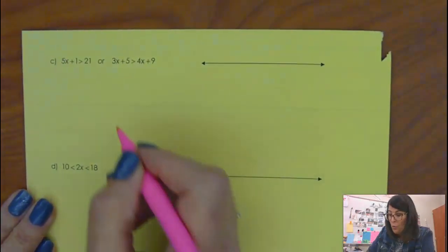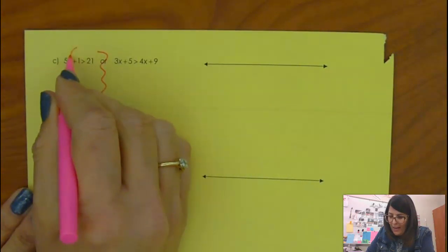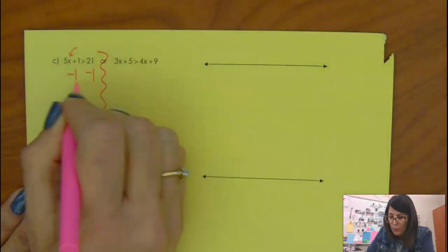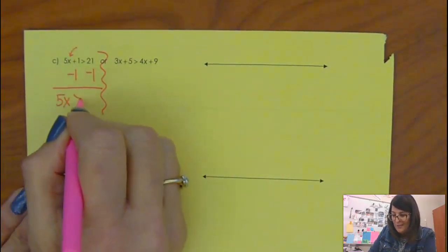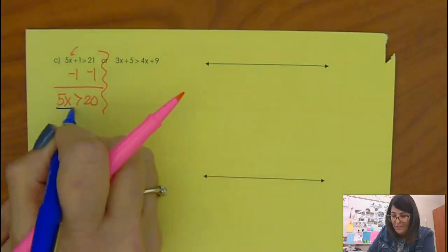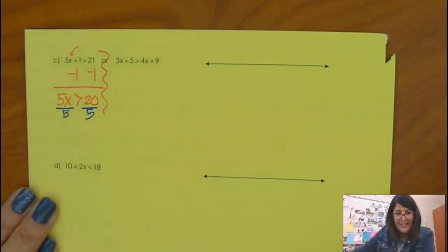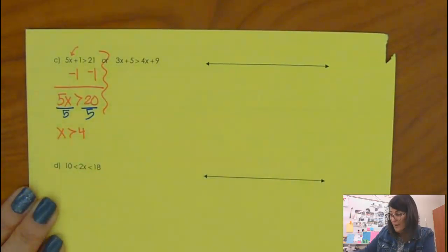Okay, here's more practice with an OR. Again, we're just going to solve each baby equation. So I want to get the X alone, so work with what's closest to me, furthest away from the X, not closest to. I have 5X is greater than 20. 5 is multiplied, so you divide that. So my first one is X is greater than 4.